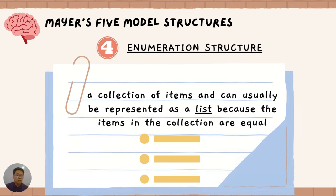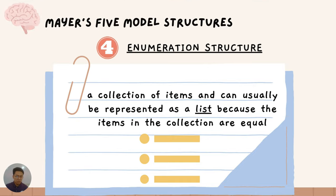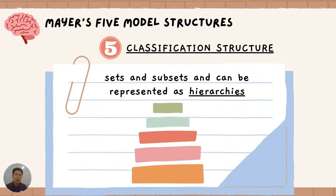Another one is the enumeration structure, which is a collection of items usually represented in a list because items in this collection are equal. You may use bullets, checklists, and others. You may also integrate key terms or a summary of the discussion using an enumeration structure. The last one is the classification structure, in which sets and subsets can be represented as hierarchies — from the top going to the bottom item. Those are the five model structures of Mayer.